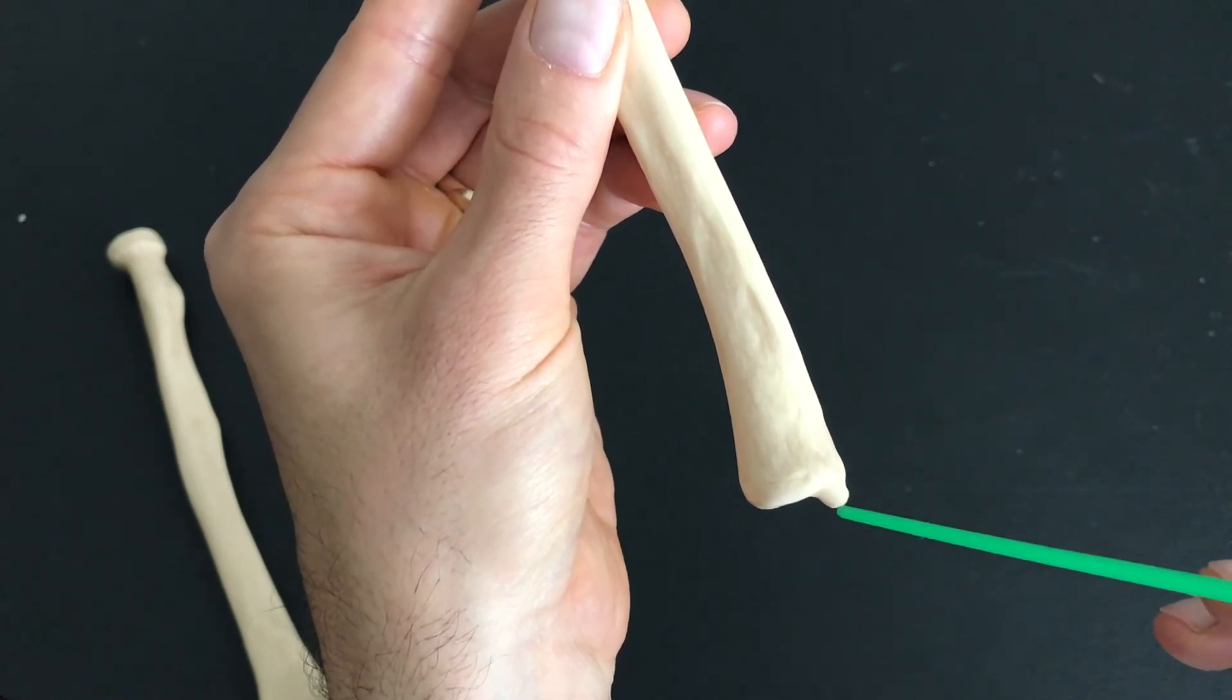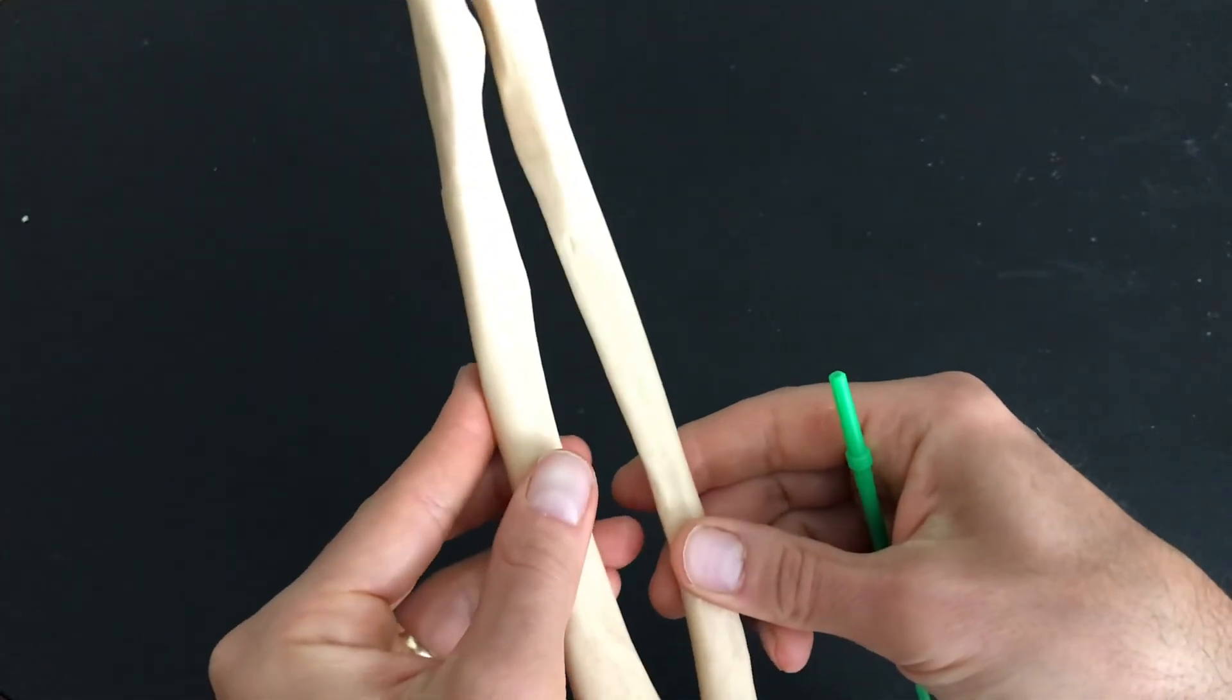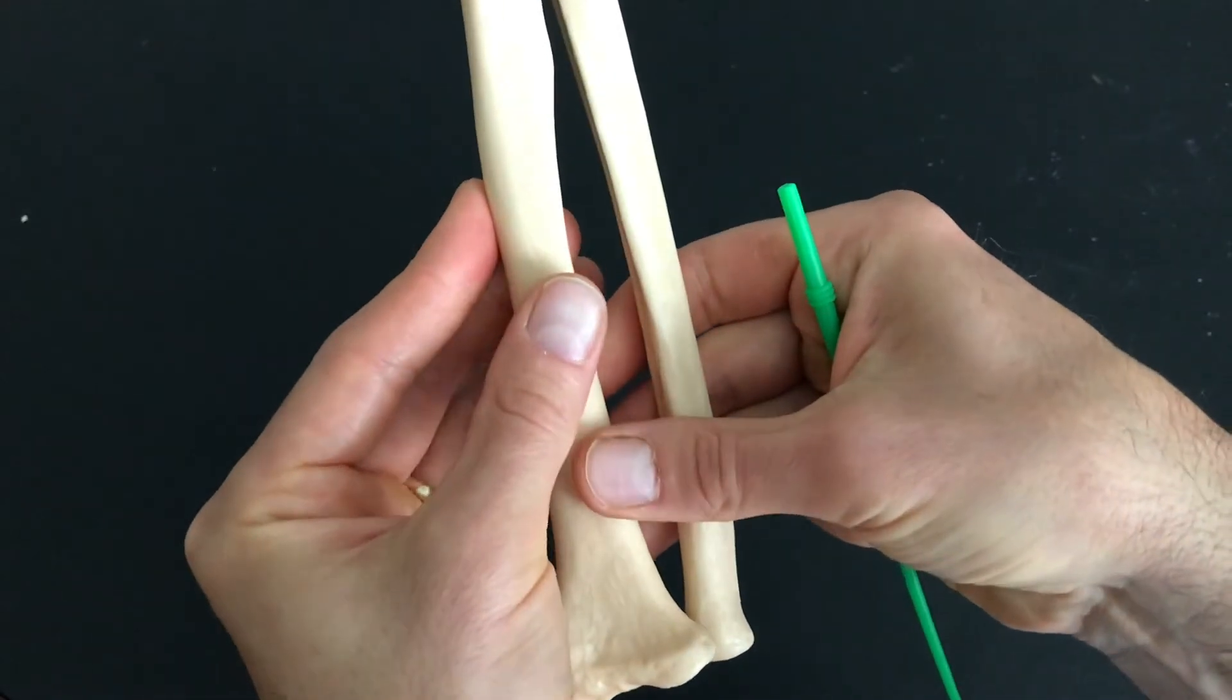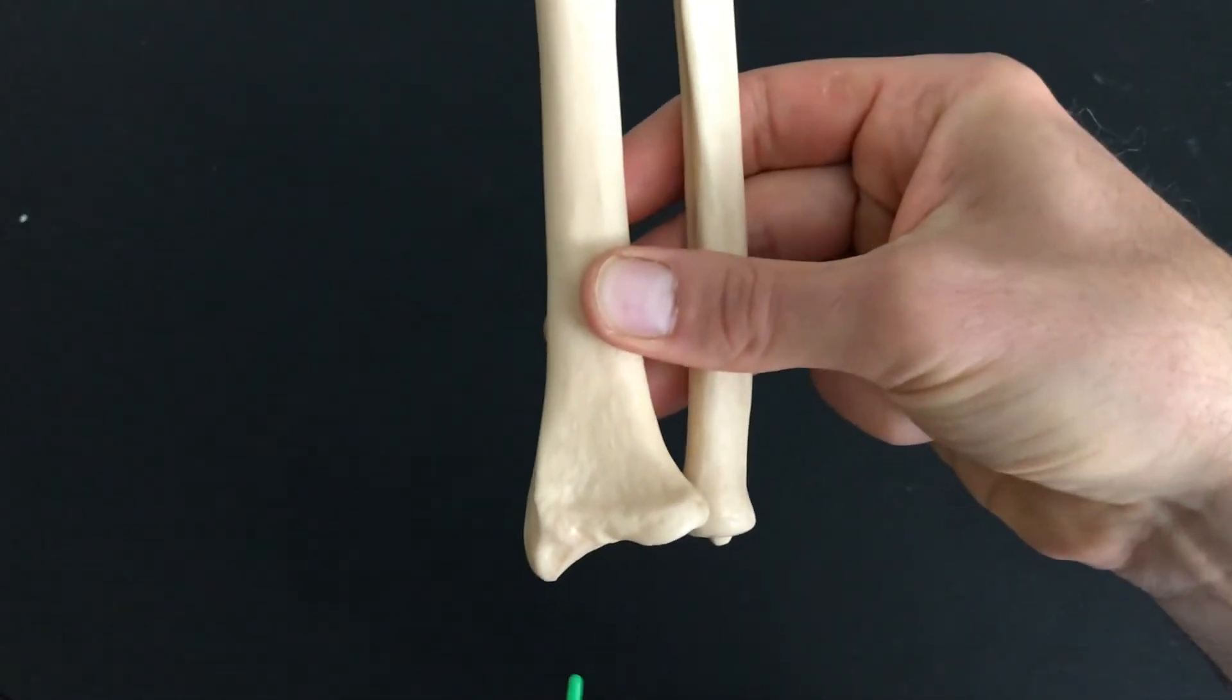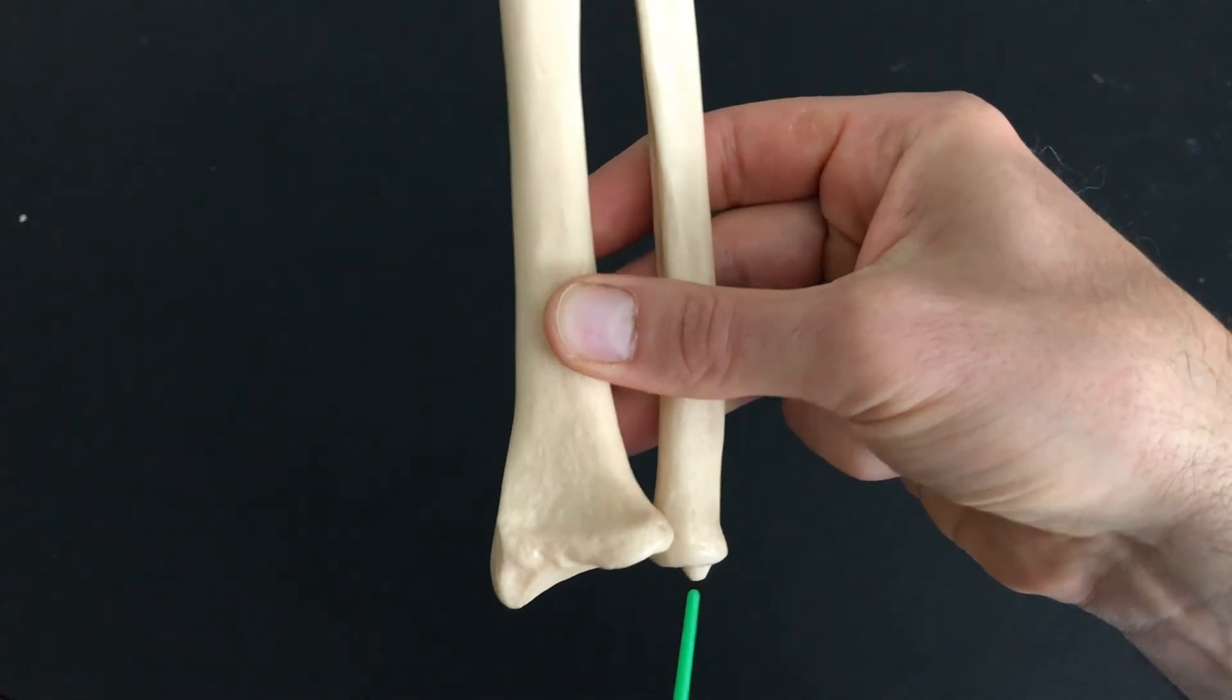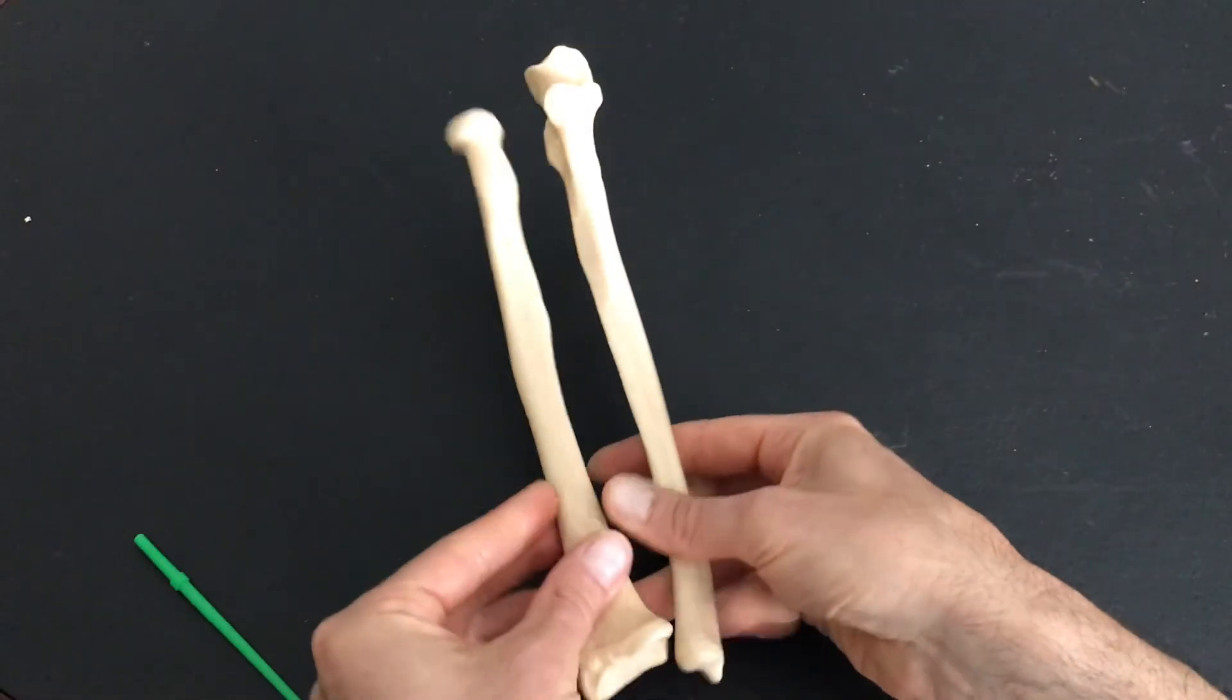So we have a styloid process on our ulna, and when we put these two side by side the way they're supposed to fit, you'll see there is also a styloid process of your radius. Styloid process of the radius, styloid process of the ulna. Radius and ulna.